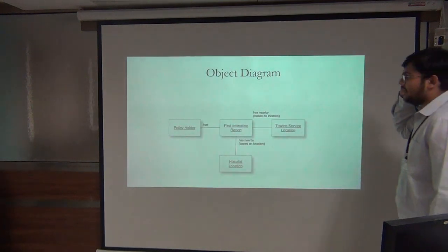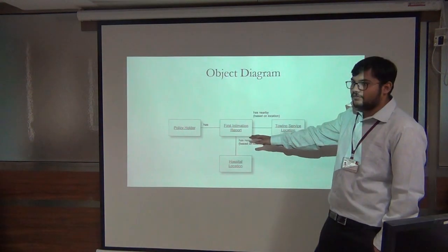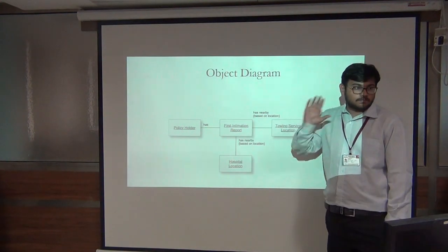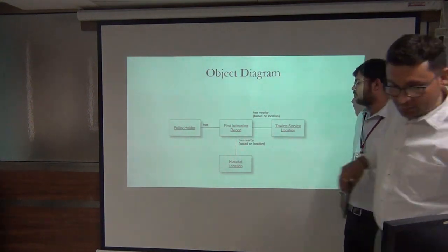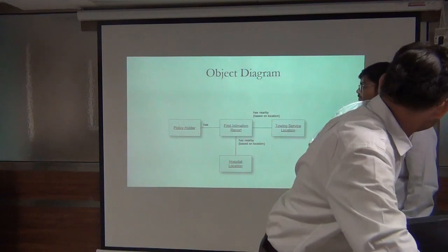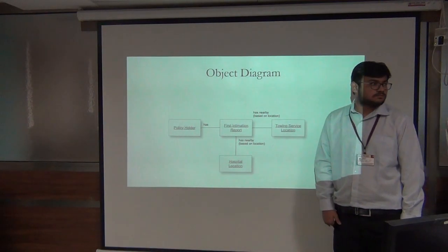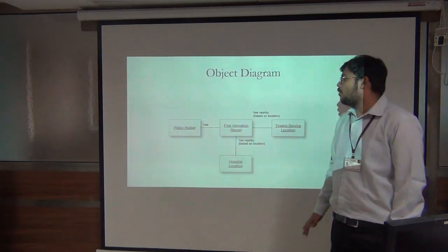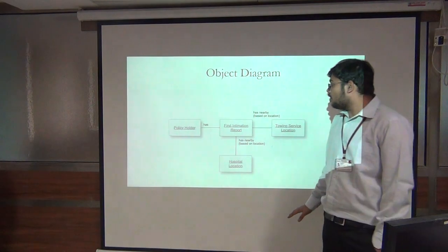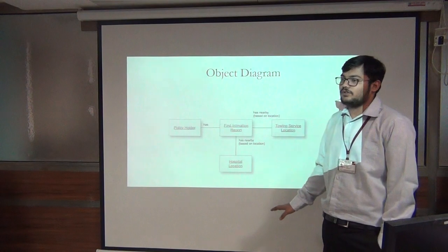This is the object diagram to match the policy holder as first information. The policy holder has first information report. The first information report will contain the hospital location as well as the tow service locations.